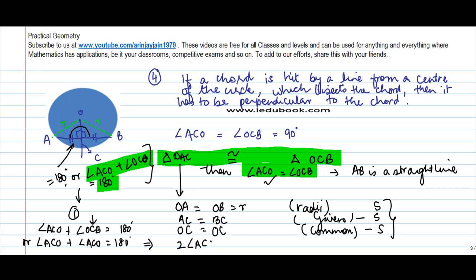Meaning, two times angle ACO is equal to 180 degrees, or angle ACO is equal to 90 degrees. 180 divided by 2 is equal to 90 degrees.